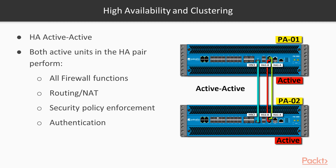If you have one in Active-Passive mode, those firewalls will just be sitting around doing nothing until something happens and it needs to take over. In Active-Active, both of them actually forward traffic, both of them are actually operating, and in case one goes down, the other one can still forward the traffic. We're going to be doing routing, NAT, address translation, policies, authentication — basically everything that the Palo Alto does will be active on both units.